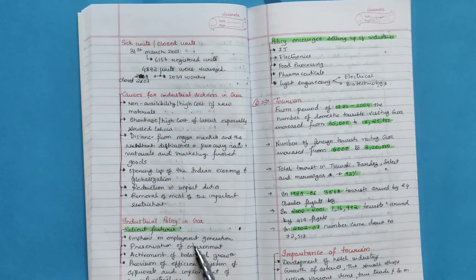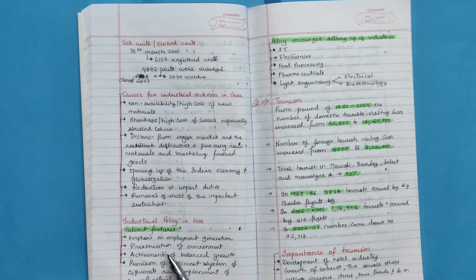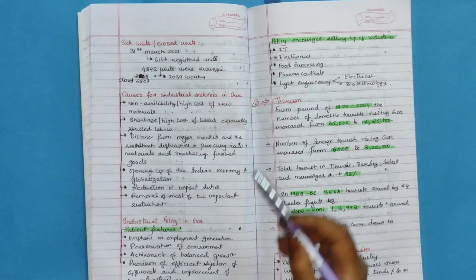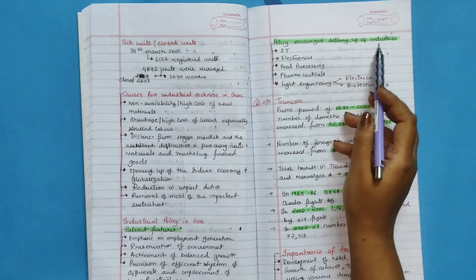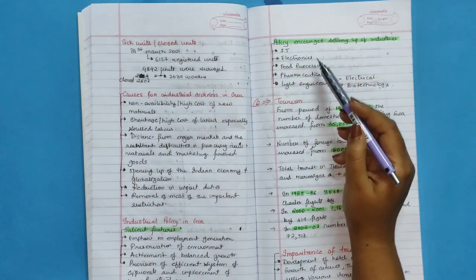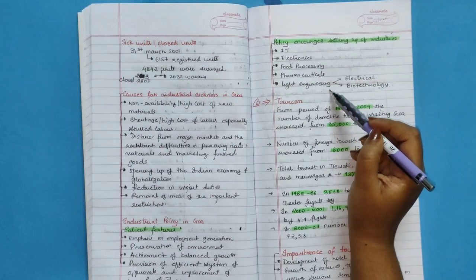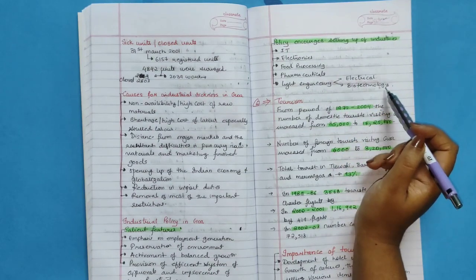Industrial policy in Goa. Salient features: Emphasizes on employment generation, preservation of environment, achievement of balanced growth, provision of efficient system of incentives and improvement of the infrastructure. Policy encourages setting up of industries like IT, electronics, food processing, pharmaceutical, light engineering like electrical and biotechnology.